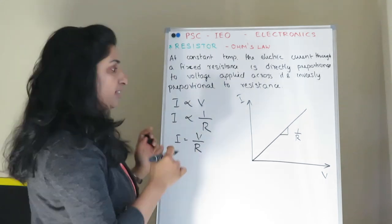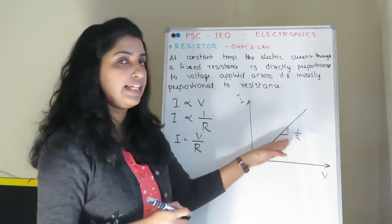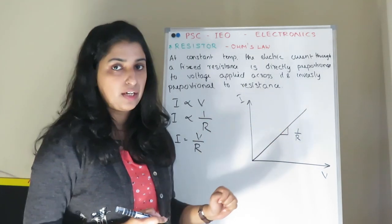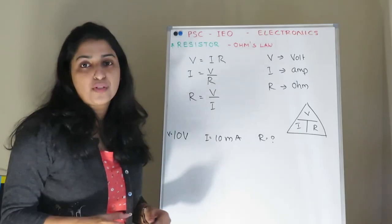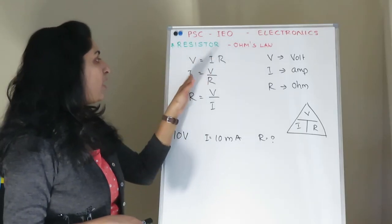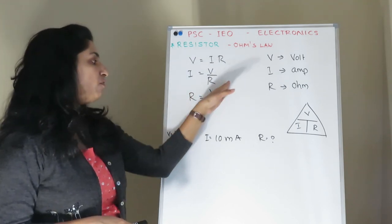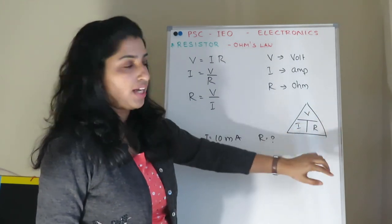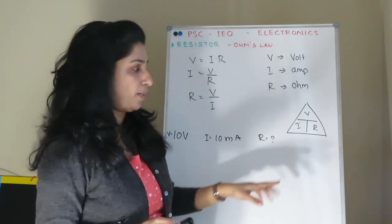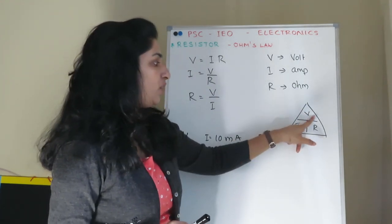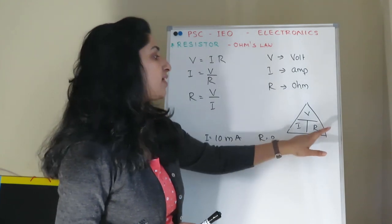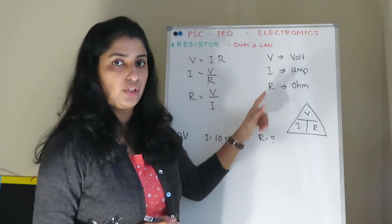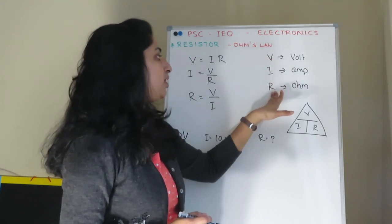I is equal to V by R. This is the voltage-current characteristic: V is equal to I into R, and I is equal to V by R. Looking at the Ohm's Law triangle, here is V, here is I, and here is R. You can multiply or divide the values accordingly. The units are volts for voltage, amperes for current, and ohms for resistance.